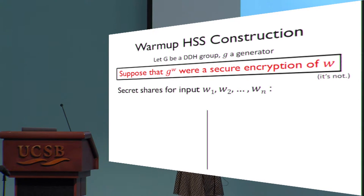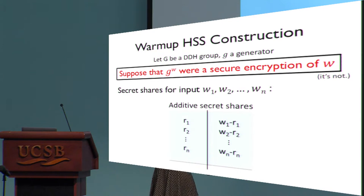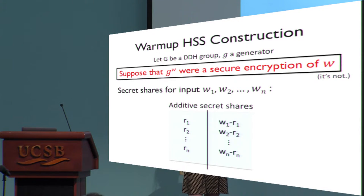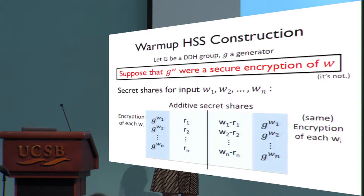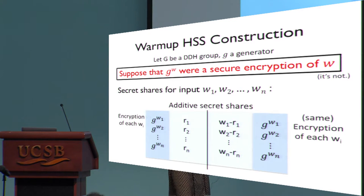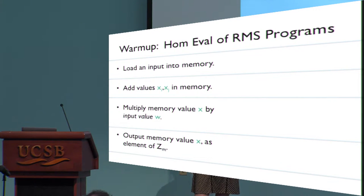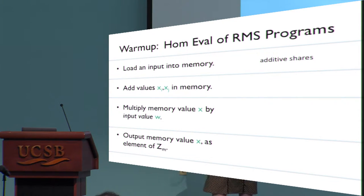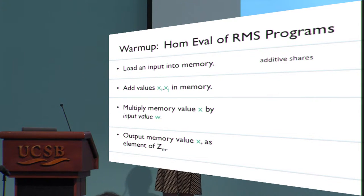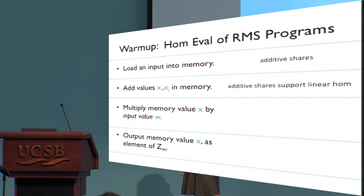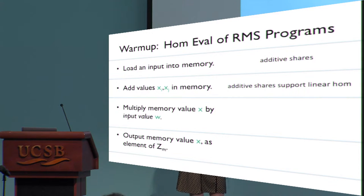Here's how we generate the secret shares. Given input w, the first thing we do — one line denotes one party's share, the other line the other's — is give additive secret shares of each of the input values, just random values that add to the correct value. The second piece is to give this pseudo-encryption G^w to each of the parties, with the same value on both sides. The invariant we'll maintain is that any value in memory is held as an additive secret share between the two parties. Loading an input is trivially handled as part of the original secret sharing, and adding values in memory is straightforward: add shares locally to get an additive share of the sum.